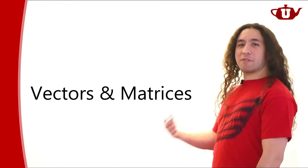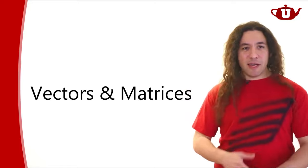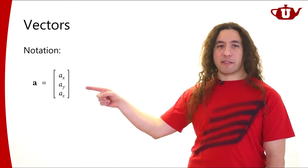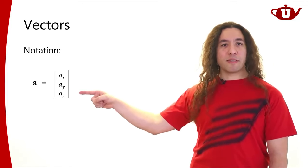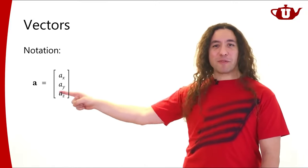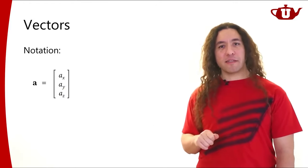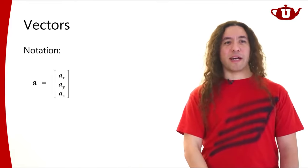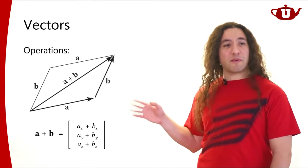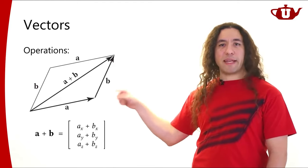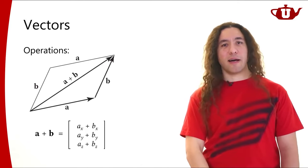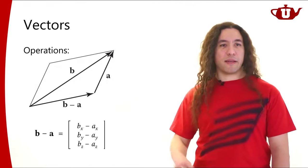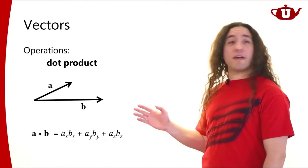Continuing the background: our next stop is vectors and matrices. I'll set our notation. A vector is a 3D vector with three scalar components. I'll be using bold characters for vectors and italicized characters for scalars. Vector operations — you should be very comfortable with these: adding two vectors together gives a resulting vector, and you can also subtract vectors.